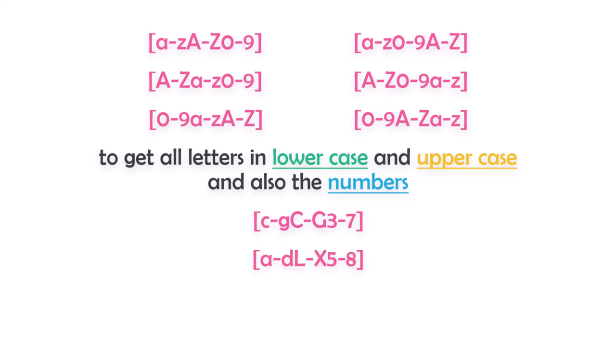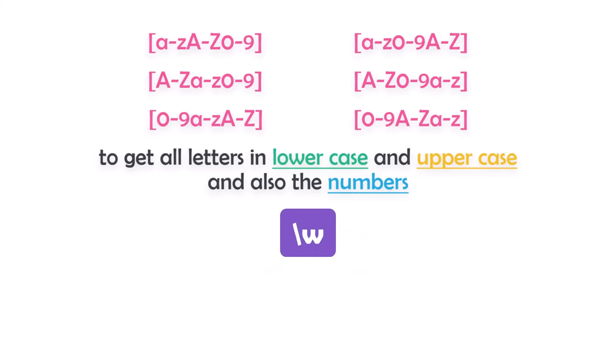We can also use a simpler pattern to get the same result: \w (backslash W in lowercase). This pattern matches any character or number — it covers letters from A to Z in both lower and uppercase, numbers from 0 to 9, and also underscore. So to find any letter, any number, or any underscore inside a text, I can use \w.